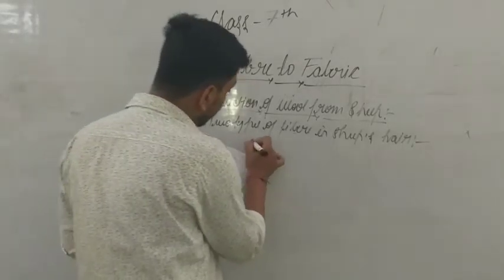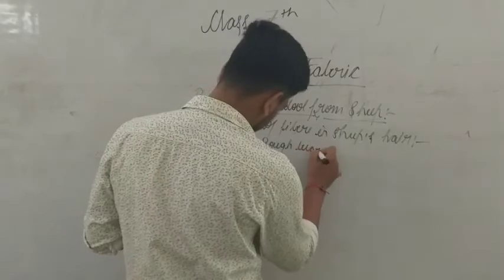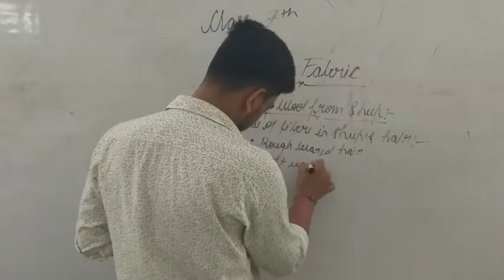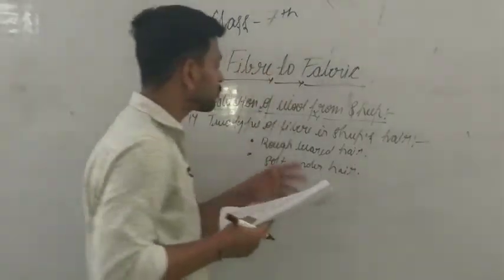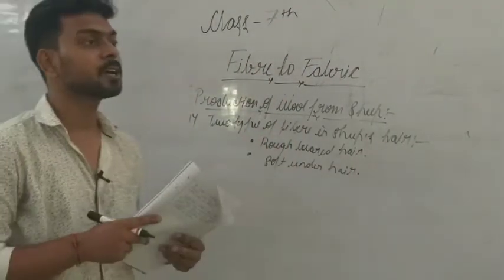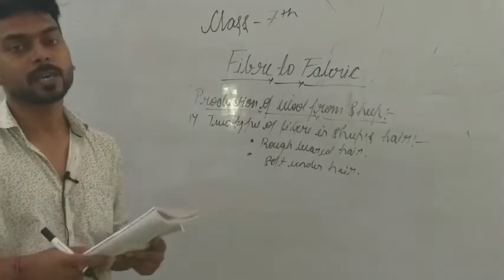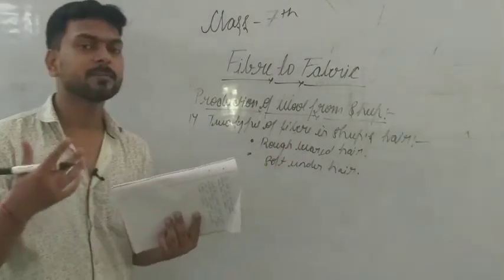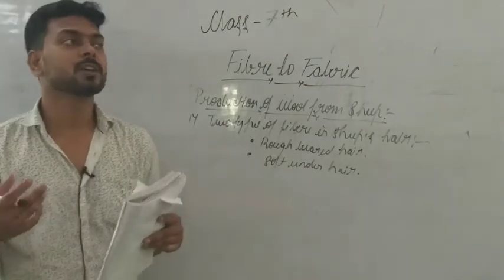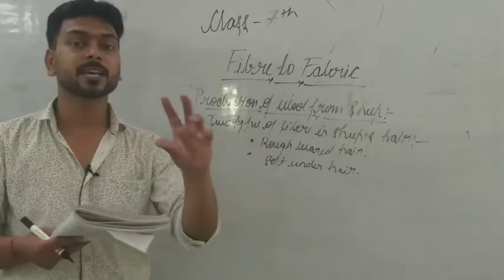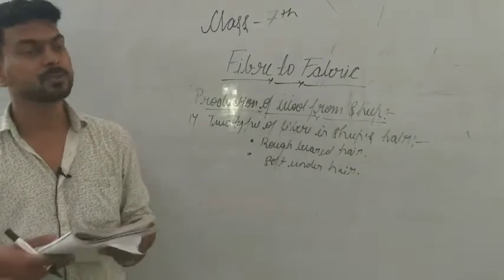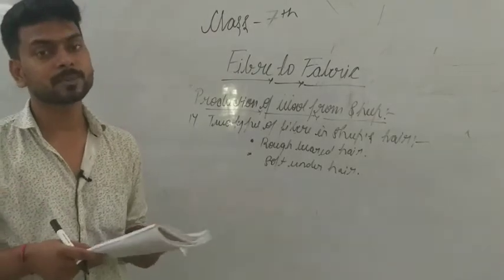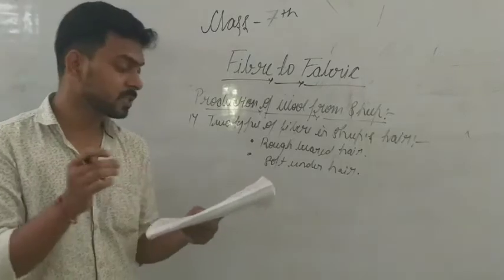Rough beard hair is the outer hair visible on the animal's body. It is called 'beard' because it has a lot of dust particles, oil particles, and grease particles stuck to it — making it rough. So we do not use rough beard hair for wool production. Instead, we use the soft under hair.